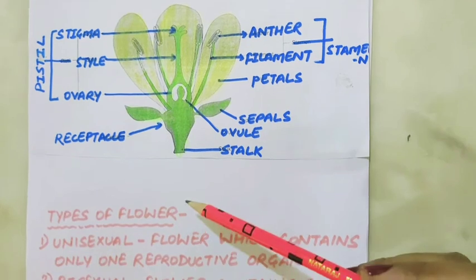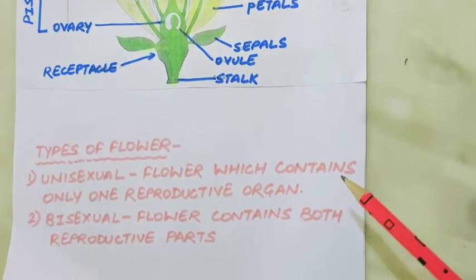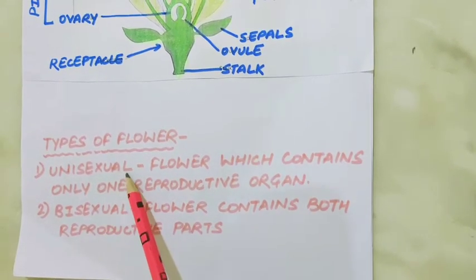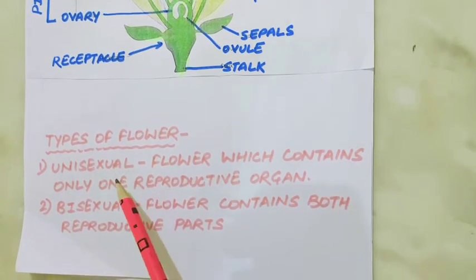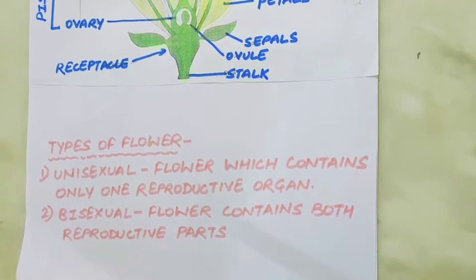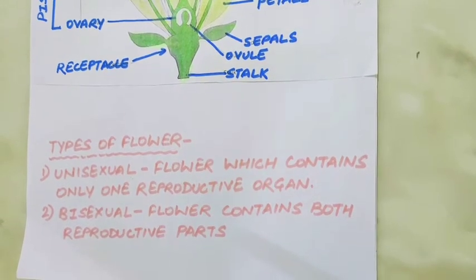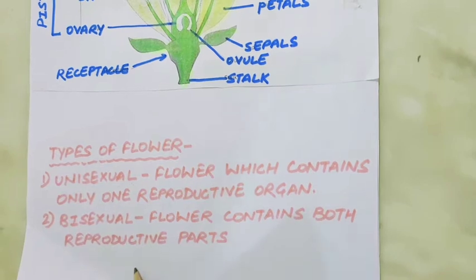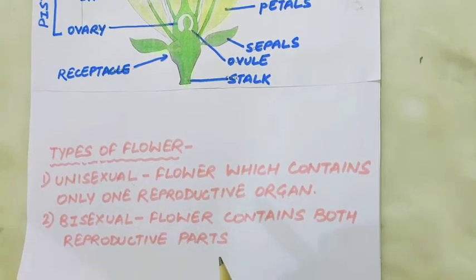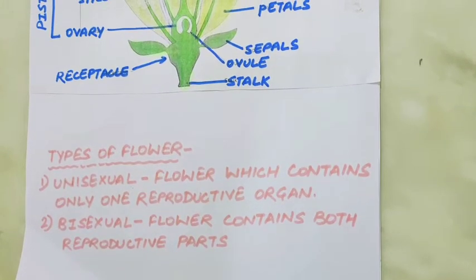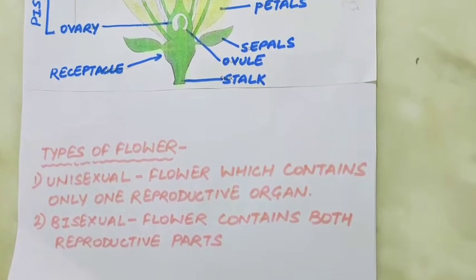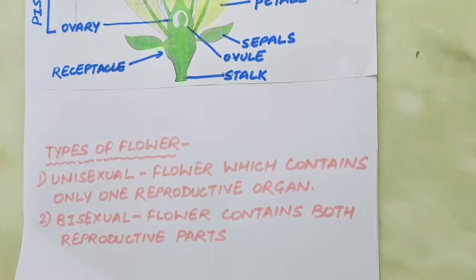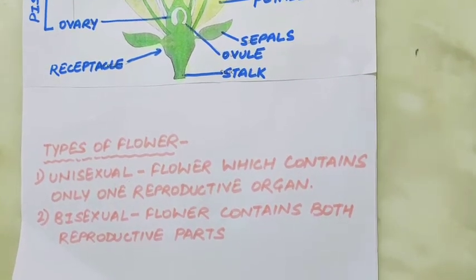On the basis of the type of reproductive organ present, flowers are of two types: unisexual and bisexual. Flowers that contain only one reproductive organ — either male or female — are called unisexual flowers, also known as incomplete flowers. Examples include papaya, watermelon, corn, and cucumber. In bisexual flowers, both male and female reproductive parts are present in a single flower. Examples include rose, mustard, and hibiscus. The function of the flower is to make male and female gametes and ensure that fertilization takes place for seed formation.